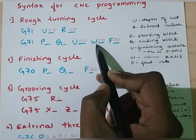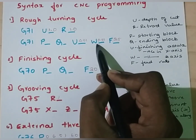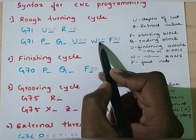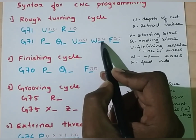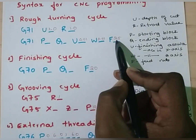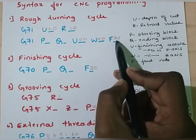W is finishing allowance in Z-axis; I am going to assume it as 0.01 mm as well. F is feed value — I am going to assume it as 25 mm per revolution.